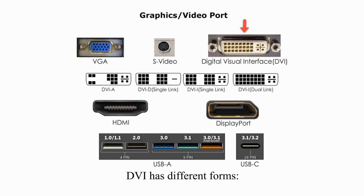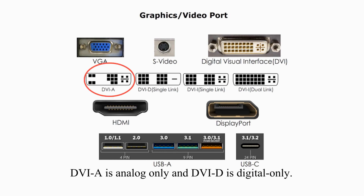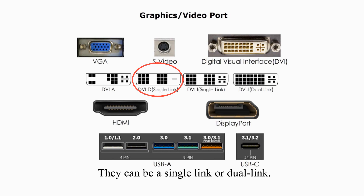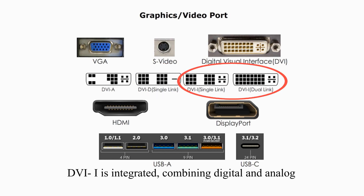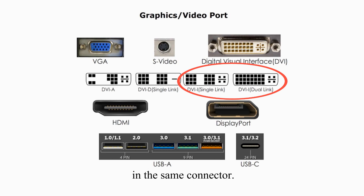DVI, or Digital Visual Interface, is used to connect digital monitors to a computer. DVI has different forms. DVI-A is analog only and DVI-D is digital only — they can be single-link or dual-link. DVI-I is integrated, combining digital and analog in the same connector, and it can also be single-link or dual-link.